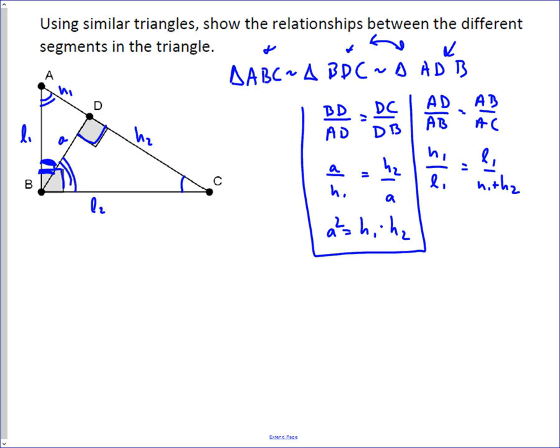And so if you finish this, you cross-multiply, and you get H1 times H1 plus H2 equals L1 squared.